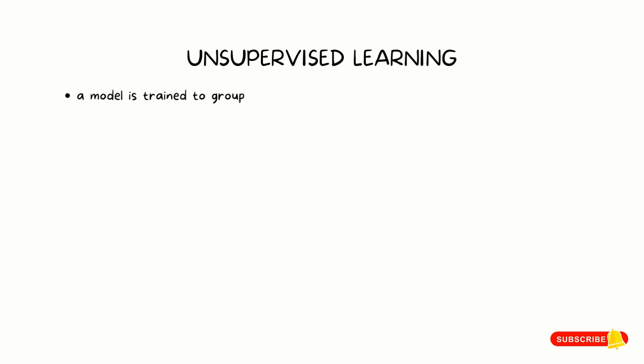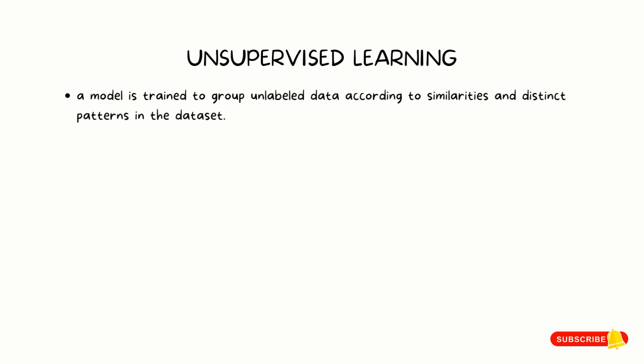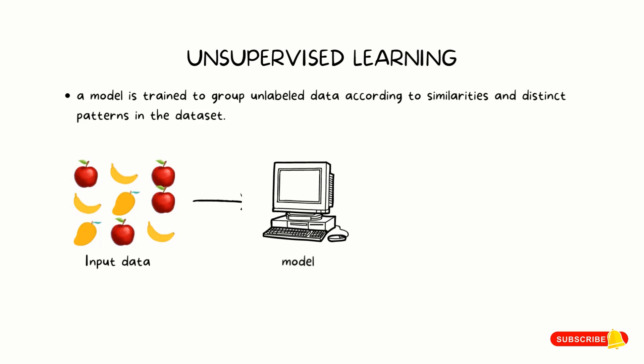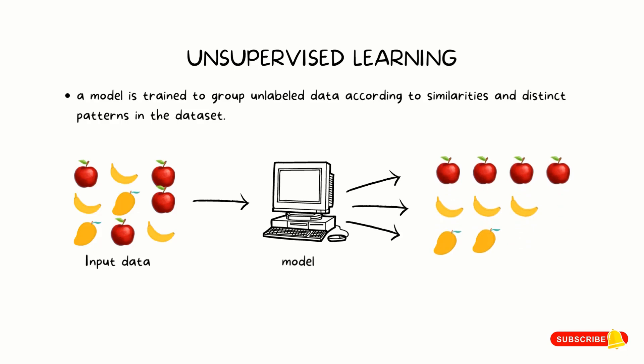Next is unsupervised learning. In unsupervised learning, a model is trained to group unlabeled data according to similarities and distinct patterns in the dataset. For example, let's say we have a dataset of various fruits and we feed this unlabeled data to the model. The model then groups the data according to their similarities — in this case, same shape and same color. The main point in unsupervised learning is that there is no labeled data saying this is an apple or this is what a banana looks like.